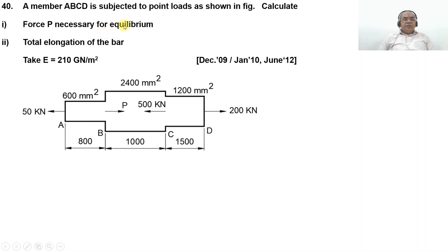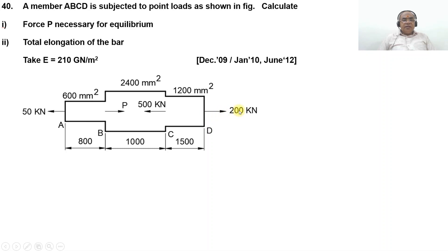The equilibrium condition states that the load acting on the left-hand side should be equal to the load acting on the right-hand side. So the left-hand side loads are 50 kilo Newton plus 500 kilo Newton, which equals P plus 200 on the right-hand side. Taking 200 to the left: 550 minus 200 gives 350. So P equals 350 kilo Newton.